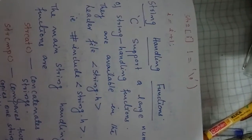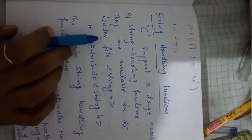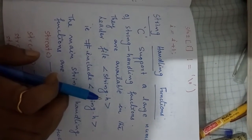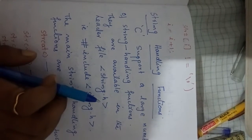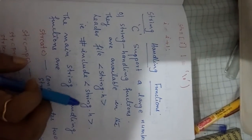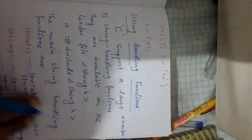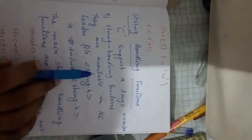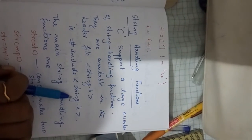Next, we are going to discuss about string handling functions. C supports a large number of string handling functions. They are available in the header file string.h. So while we are using character arrays or string variables in our program, we should include the string.h header file. The syntax is: hash include string.h.